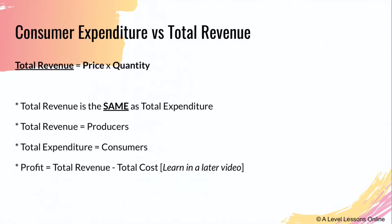Let's dive into Part 8a. Consumer expenditure versus total revenue — what is the difference and what are the similarities? First, you need to know that total revenue equals price times quantity. This is the golden rule of economics. To find revenue, you take price and multiply it by quantity — it is basically the area under the demand and supply curve. Total revenue is the same as total expenditure.